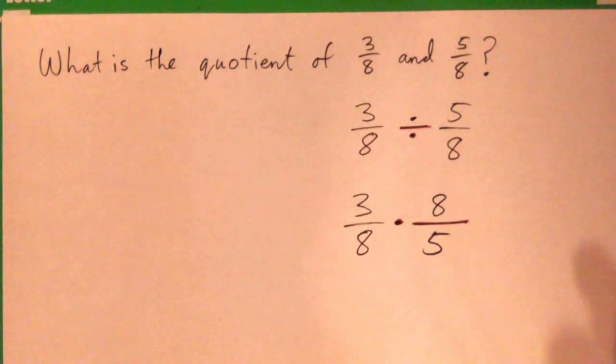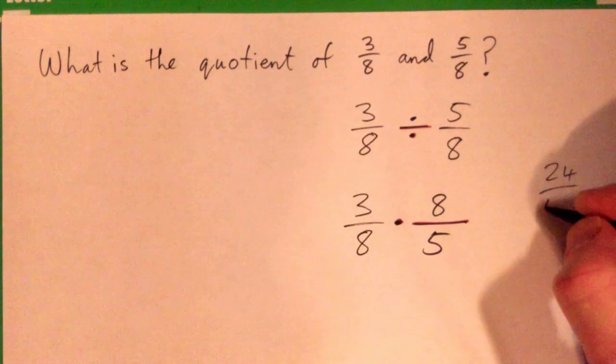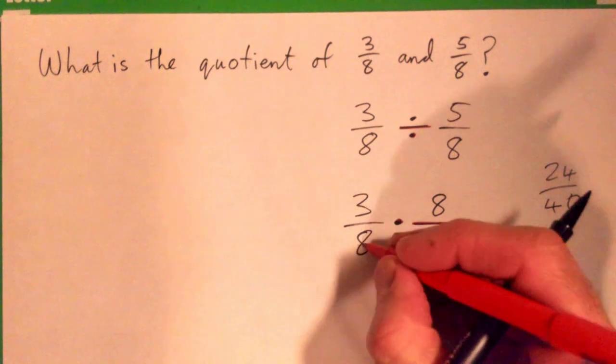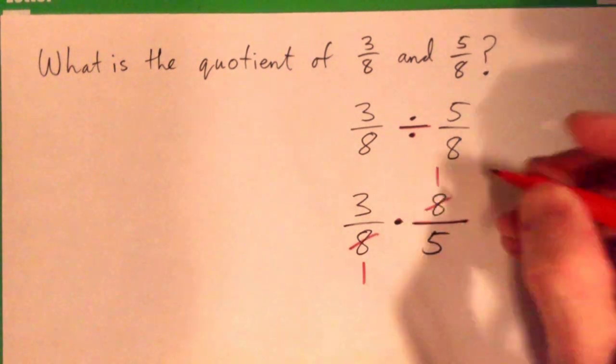Now so we multiply to get 24 over 40, or should we do something else first? Good job! Eight and eight goes once, eight and eight goes once. Well that's a little better, isn't it?